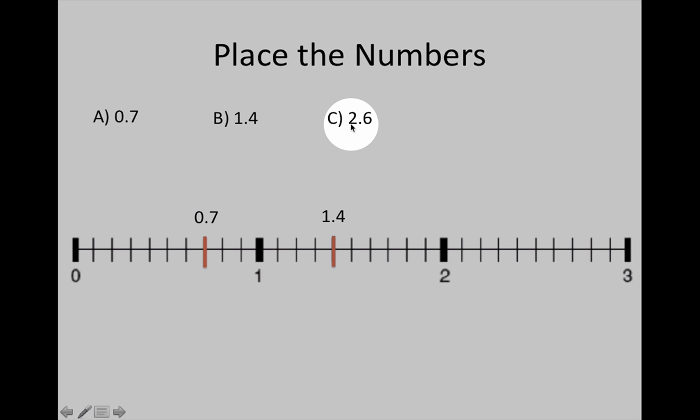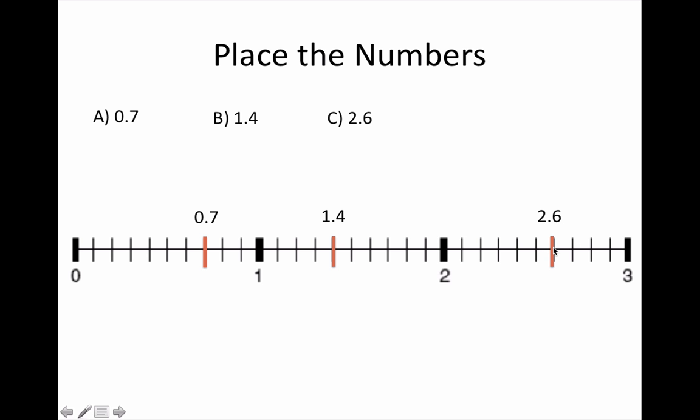Let's find 2 and 6 tenths on the number line. It's larger than 2 but smaller than 3, so we'll start counting right at the 2. The line that marks the 2 has 0 tenths added to it. So 2, 1 tenth, 2 tenths, 3 tenths, 4 tenths, 5 tenths, and 6 tenths, to be marked right there on the number line.